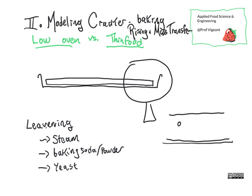Let's talk about how all of this heat transfer connects with the leavening in crackers. Crackers can be leavened by baking soda and baking powder, and looking at commercial crackers, this seems to be the most common form. Although that is also connected to steam, because we have water in the dough that is turning into steam as we go. So those two things are working together.